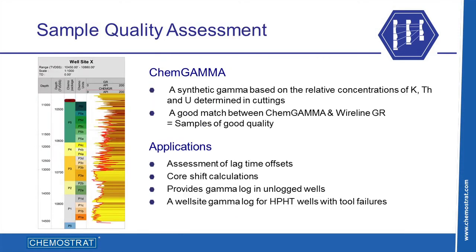The quality of cutting samples is always a concern, but Chemostrat's chem-gamma log, which is based on the concentrations of potassium, thorium and uranium in the cuttings, can be compared to the E-log gamma response to assess sample quality.